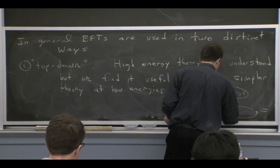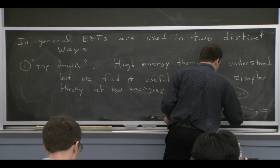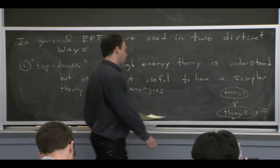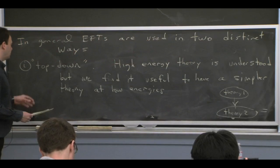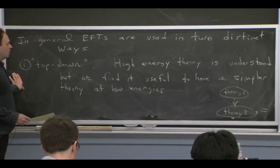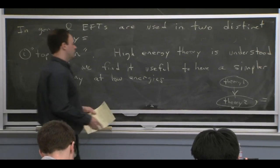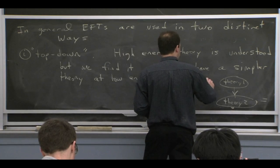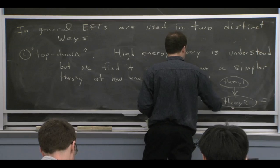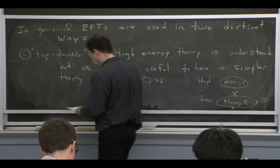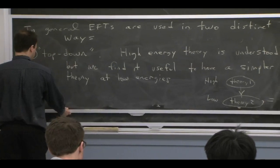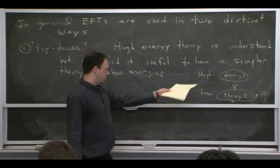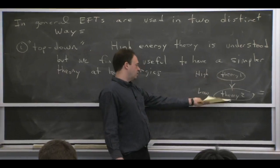But we want to go over to some other theory, Theory 2, which has fewer degrees of freedom and where we're making expansions. That's the low energy theory. This is the top-down situation: coming from the top, from high energy, down.